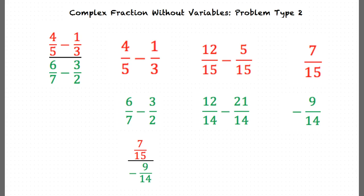Now we multiply the numerator by the reciprocal of the denominator. This will look like 7 over 15 times negative 14 over 9. We simplify further to give us negative 98 over 135.